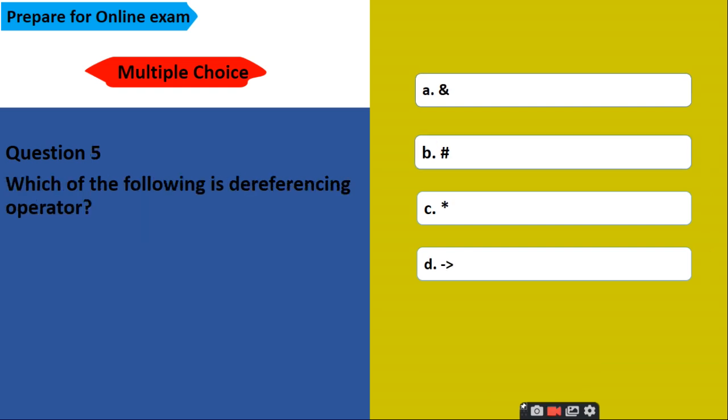Which of the following is dereferencing operator? Options are A, ampersand, B, hash, C, asterisk and D, pointer. Okay, so correct answer is C. We are using the asterisk or value at address operator as a dereferencing operator.